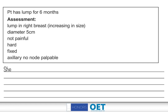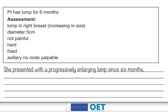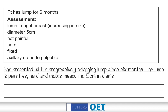Time's up. Here's my sentence: 'She presented with a progressively enlarging lump since 6 months. The lump is pain-free, hard and mobile, measuring 5 cm in diameter. No palpable nodes were noticed in the axillary area.'